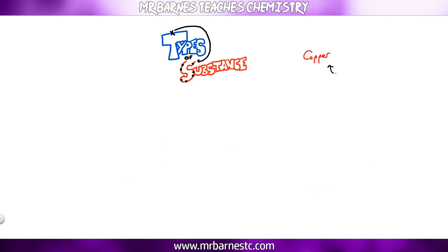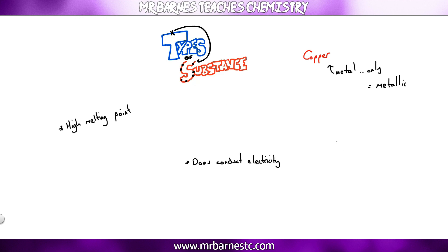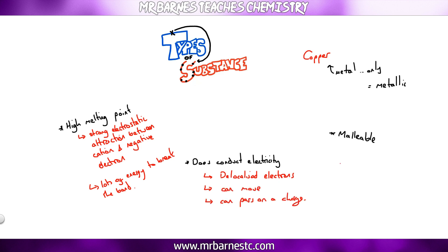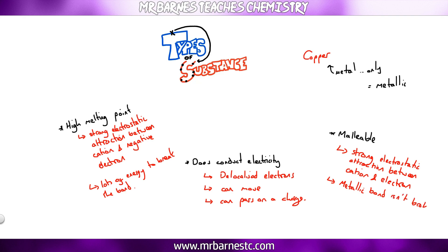Example four: copper is a metal only, therefore it is metallic. It has a high melting point, conducts electricity, and is malleable. The high melting point is due to the strong electrostatic attraction between the cations and the delocalised electrons, requiring lots of energy to break the bond. It conducts because it has delocalised electrons that are free to move and can carry a charge. It is malleable because the strong electrostatic attraction between cations and electrons means the metallic bond is not broken when layers are pushed past each other.